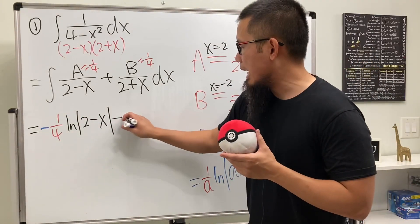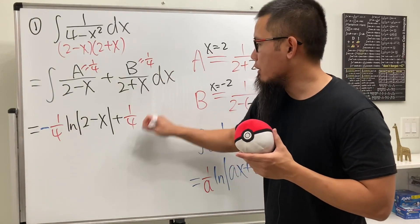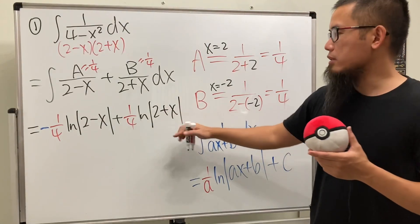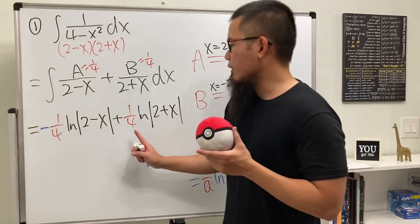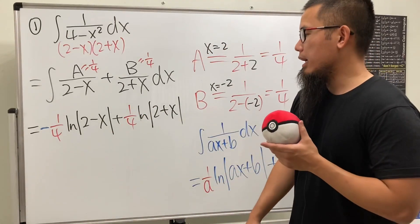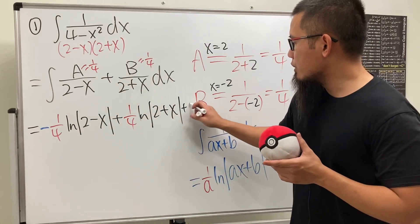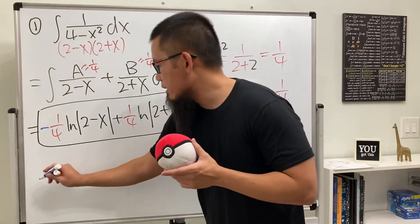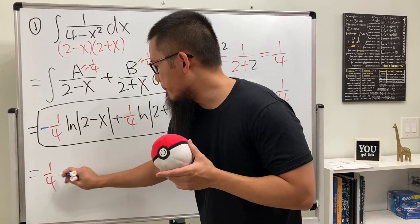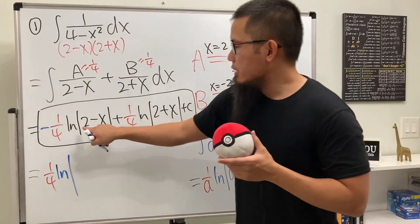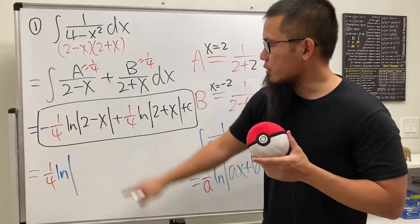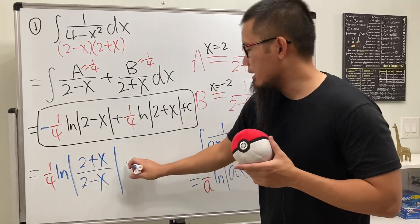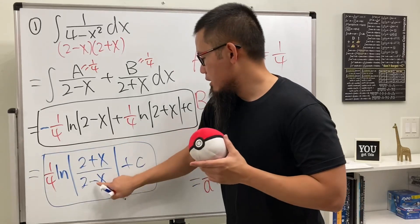For this one, we add 1/4 times the integral of 1 over (2 plus x), which gives ln|2 plus x|, and the coefficient is just 1 so it doesn't matter. In the end we have the 1/4 in common and we can combine the logarithms. Factoring out 1/4, we get ln|(2 plus x)/(2 minus x)| plus C, since the negative sign sends (2 minus x) to the denominator.